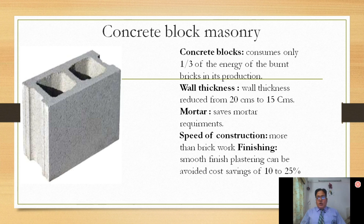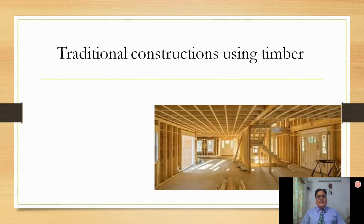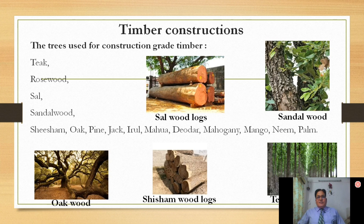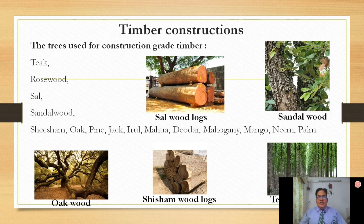The third part of this chapter is traditional constructions using timber. Before going to the timber construction material, we have to understand what are the types of timbers. These include teak wood, log, rock rosewood, sal, sandalwood, sissam, oak, pine, jack, iron, mohua, devdar, mahogany, mango, neem, and palm. The photographs show the sal wood logs, sandalwood, teak wood, sissam wood logs, and oak wood.